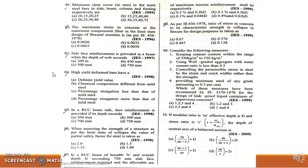Eighth question: As per IS 456-1978, the ratio of stress in concrete to its characteristic strength in collapse in flexion for design purposes is taken as. In the limit state of failure collapse, the ratio of stress in concrete to its characteristic strength is 0.447. So option C is the correct answer.